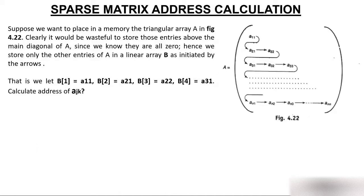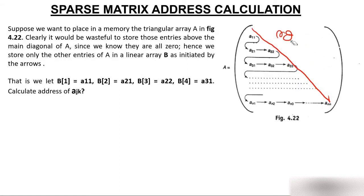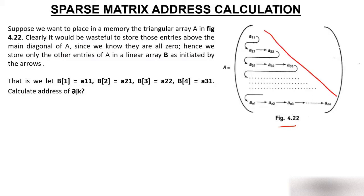The figure is in front of you. The figure shows that these elements are non-zero, and all elements above this diagonal are zero. We are not keeping those zero elements because the advantage of sparse matrix is to reduce storage space wastage — we do not store zero values. Suppose we want to place in memory the triangular array A shown in figure 4.22. It would be wasteful to store entries above the main diagonal since we know all those values are zero. Hence, we store only the other entries.